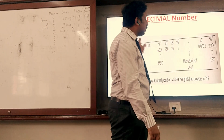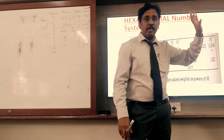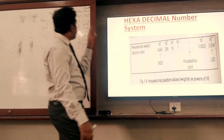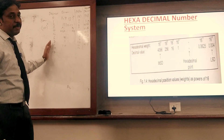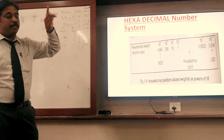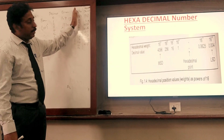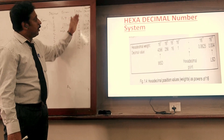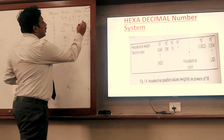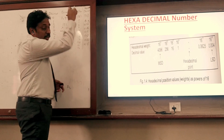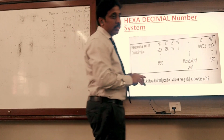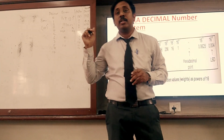Left side carries positive powers; right side carries negative powers. Overall summary: Decimal has base 10 — ten numbers, 0 to 9. Binary has base 2 — two numbers, 0 and 1. Octal has base 8 — eight numbers, 0 to 7. Hexadecimal has base 16 — sixteen numbers, 0 to 9 and A, B, C, D, E, F. We will see each in detail. Got the concept? Any doubts?